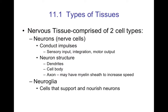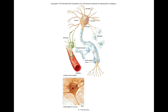Nervous tissue involves two different cell types: neurons, which are parenchymal and responsible for transmitting impulses, and neuroglial cells, which are responsible for supporting and nourishing. The schematic diagram shows these cell types working together — neurons in a beige-yellow color with dendrites branching off, and a myelin sheath in grayish-blue surrounding them. The myelin sheath helps with conductivity and nourishes and supports the neurons.